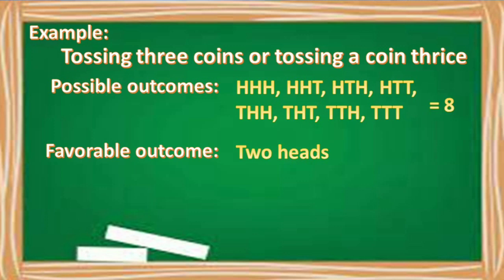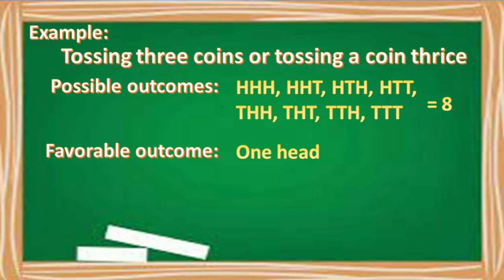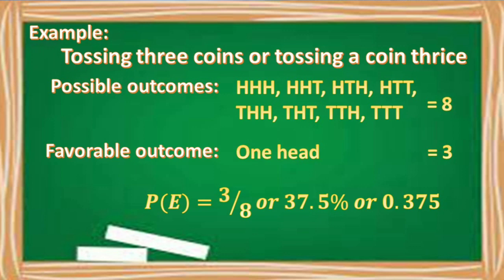If our assigned favorable outcome is two heads, we have three outcomes containing two heads, and these are head-head-tail, head-tail-head, and tail-head-head. Therefore, the number of favorable outcomes is 3. Thus, the probability of an event is equal to 3/8, or 37.5%, or 0.375. And if our favorable outcome is one head, we also have three outcomes containing one head: head-tail-tail, tail-head-tail, and tail-tail-head. Therefore, the probability is also 3/8, or 37.5%, or 0.375.